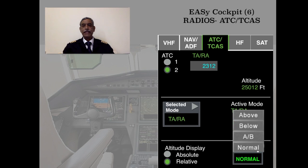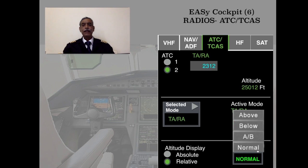The next horizontal menu is ATC/TCAS. The provisions are well-known and straightforward. The modes — Above, Below, Above and Below, and Normal — are all selectable. The Above mode covers up to 7,000 feet above and 3,000 feet below. There is a TA/RA mode select: TCAS resolution advisory or traffic advisory only is also available.